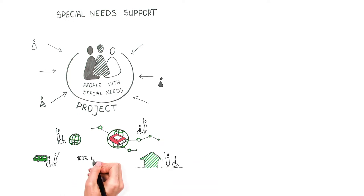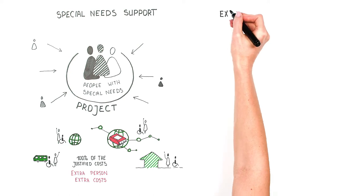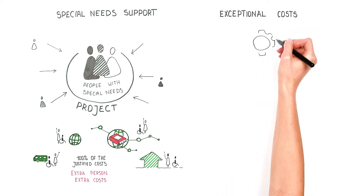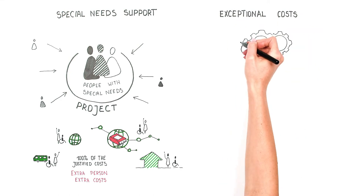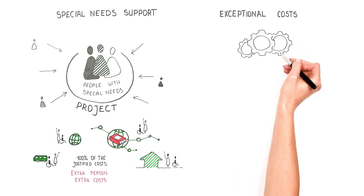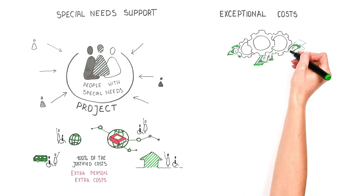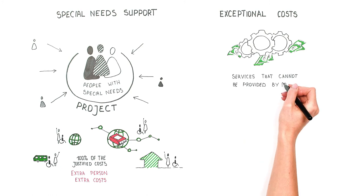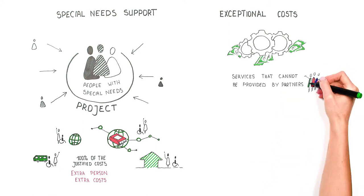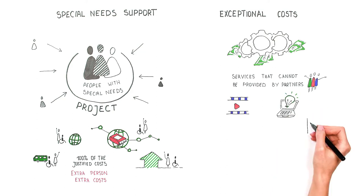Exceptional costs: this category includes the costs of subcontractors, the purchase of goods and services, and the cost of a financial guarantee. This should only cover the services that cannot be provided by partners.